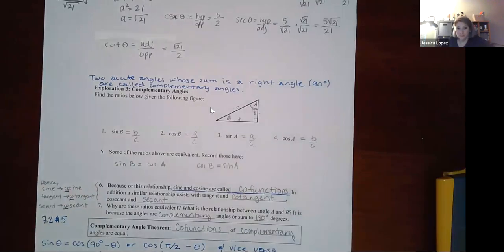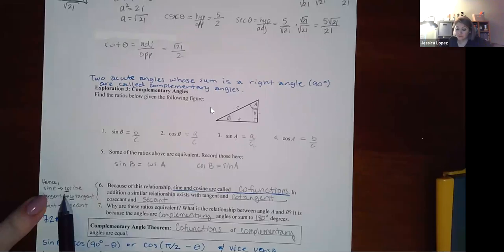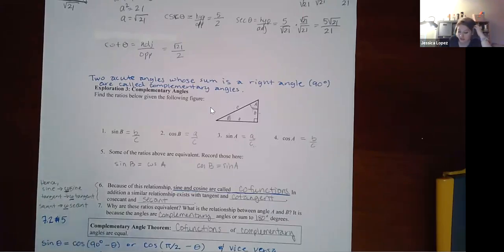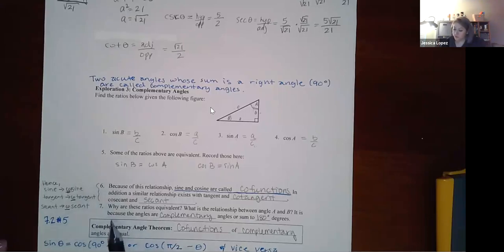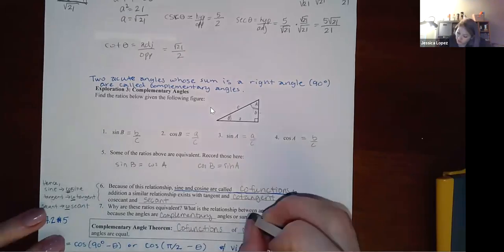This is because sine and cosine are co-functions. Similarly, there's a relationship between tangent and cotangent, and between secant and cosecant. The prefix 'co' comes from 'complementary.' So sine's complement is cosine, tangent's complement is cotangent, and secant's complement is cosecant.